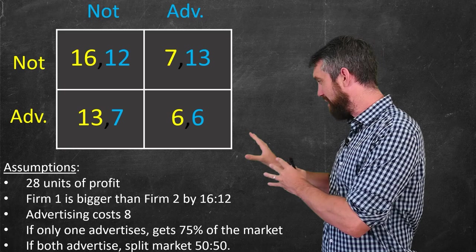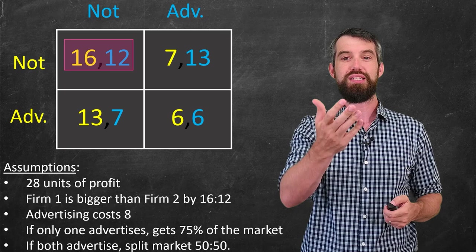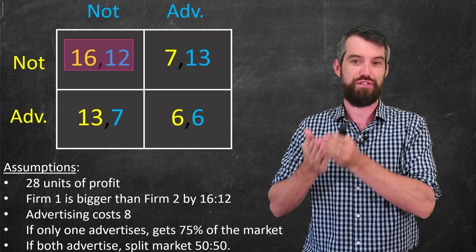I've put all these assumptions down here. They don't matter all that much for the purpose of the video. But I just want to note that, for example, the not-not category represents the fact that firm one in yellow is bigger than firm two. That's why it's like a 16-12 split.